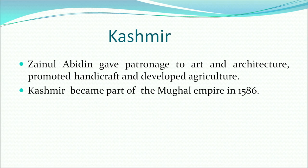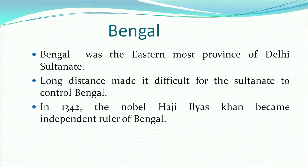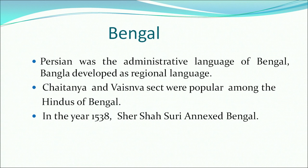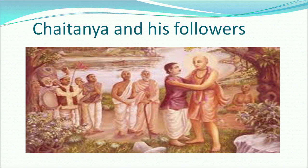Bengal was the easternmost province of the Delhi Sultanate. The long distance made it difficult for the Sultanate to control Bengal. The noble Haji Ilyas Khan became the independent ruler of Bengal, as was the case in most situations after the weakening of central power. Persian was the administrative language, but Bangla developed as a regional language, and many literary and artistic works were produced in this language. The Chaitanya and Vaishnava sect was popular among the Hindus of Bengal. In 1538, Sher Shah Suri finally annexed Bengal.